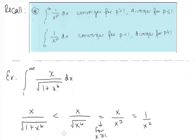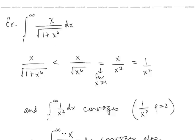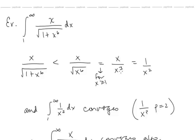Let's take a look at another example: the integral from 1 to infinity of x/√(1 + x^6). We'd like to compare this to 1/x^p. What's keeping this function from being in that form is the addition of the 1 in the denominator. So let's compare it to x/√(x^6). For x ≥ 1, x^3 is in the denominator, so that fraction simplifies to 1/x².